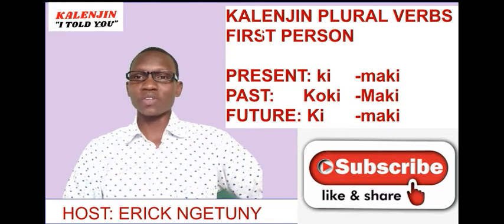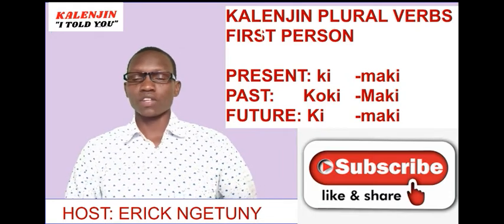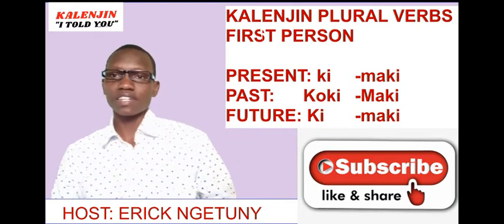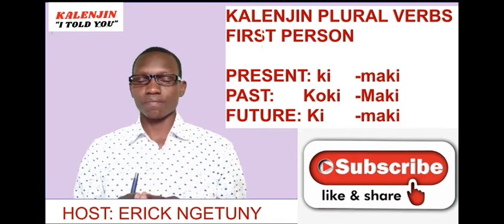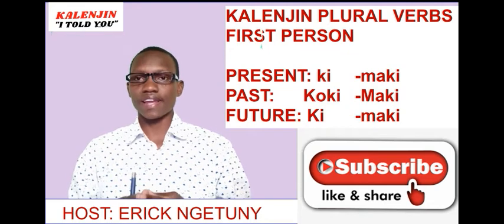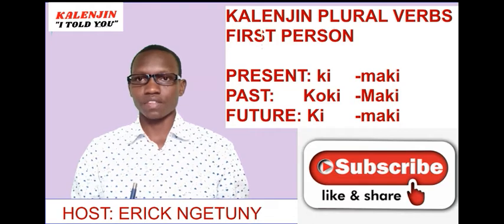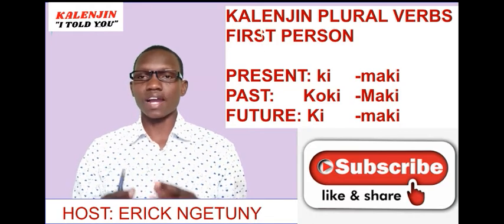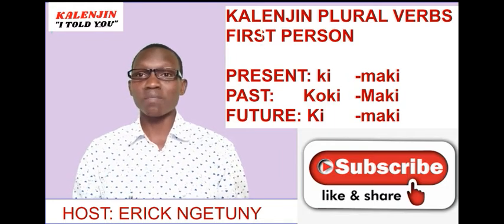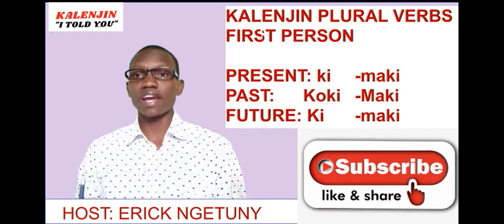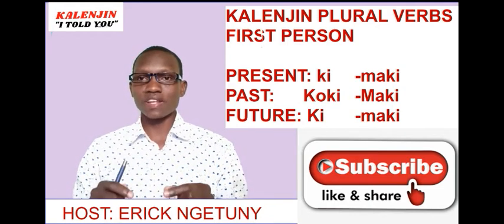We are going to look at the first person in the present tense, which is now. So first person will take Ki, which means we. For example, if we say we are crying, we will say Ki Rissoti, which means we are crying. If you want to say we are not crying, this is going to take Ma Ki, which means we are not crying. That is first person plural for the present tense.